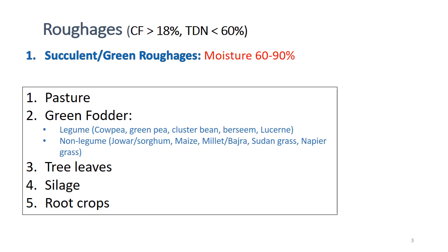Green fodder can be divided into legume and non-legume types. Legume examples include cowpea, green pea, cluster bean, berseem, and lucerne, commonly grown in Pakistan. Non-legume examples are sorghum, maize, millet (bajra), Sudan grass, napier grass, and tree leaves. Silage and root crops such as tubers, turnips, potato, and carrots are also included as green roughages.